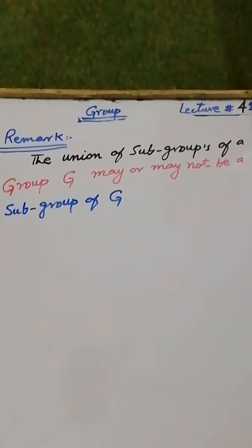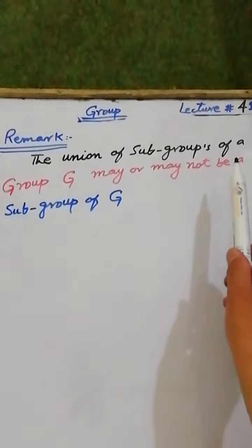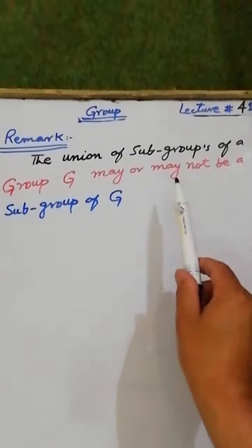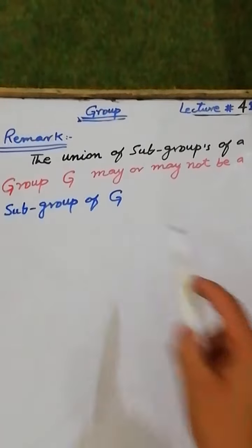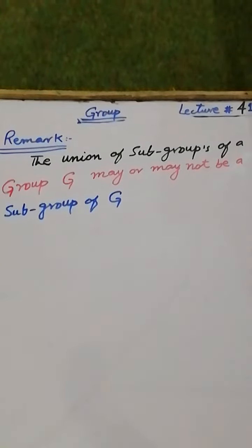Remark: The union of subgroups of a group G may or may not be a subgroup of group G. For example,